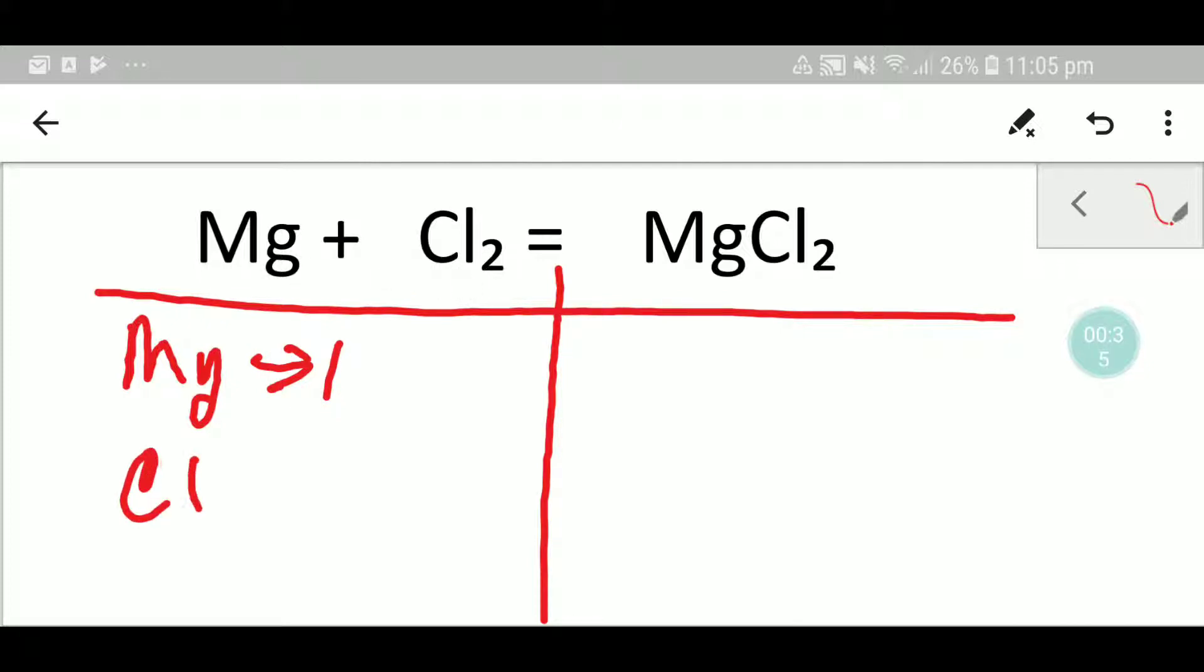On the right hand side, we have one magnesium atom and two chlorine atoms. To balance this reaction means we have to balance the number of magnesium and chlorine from both sides.